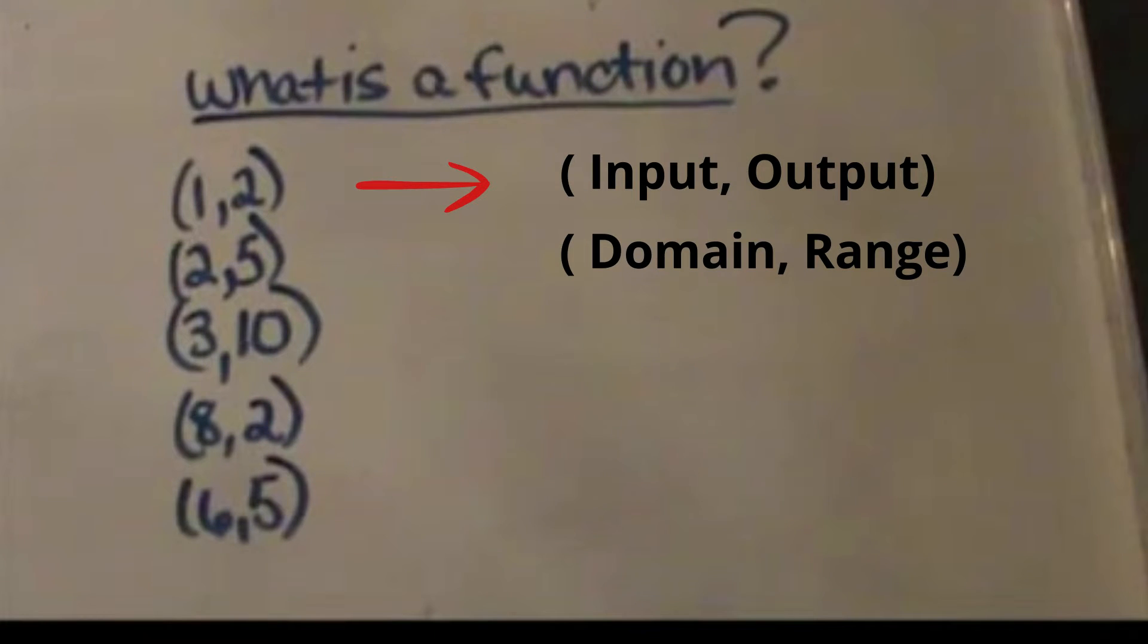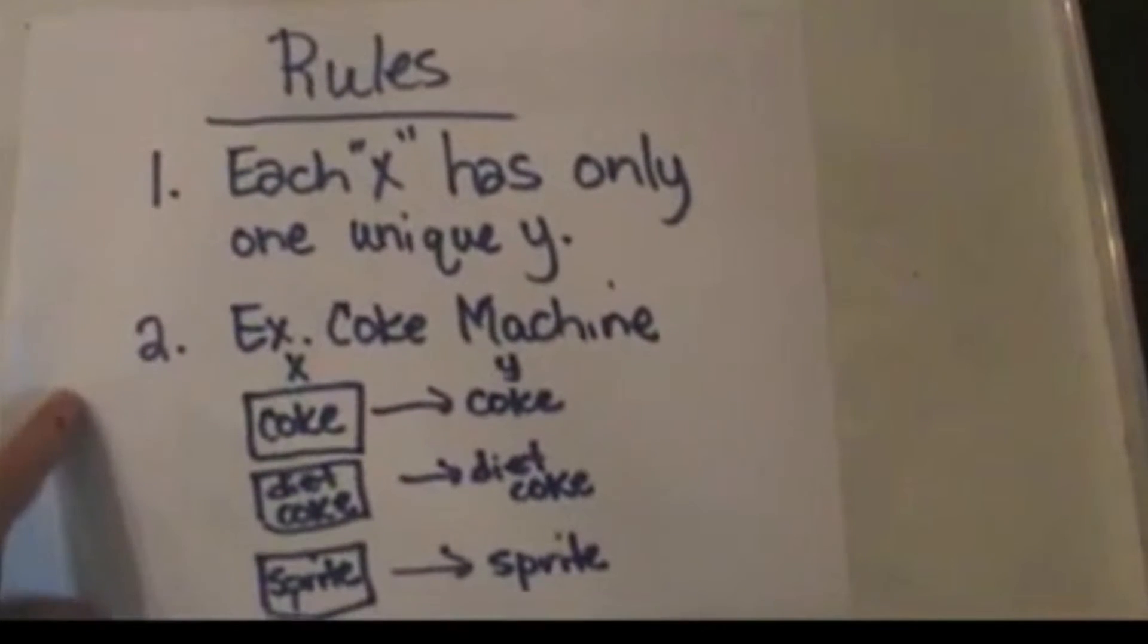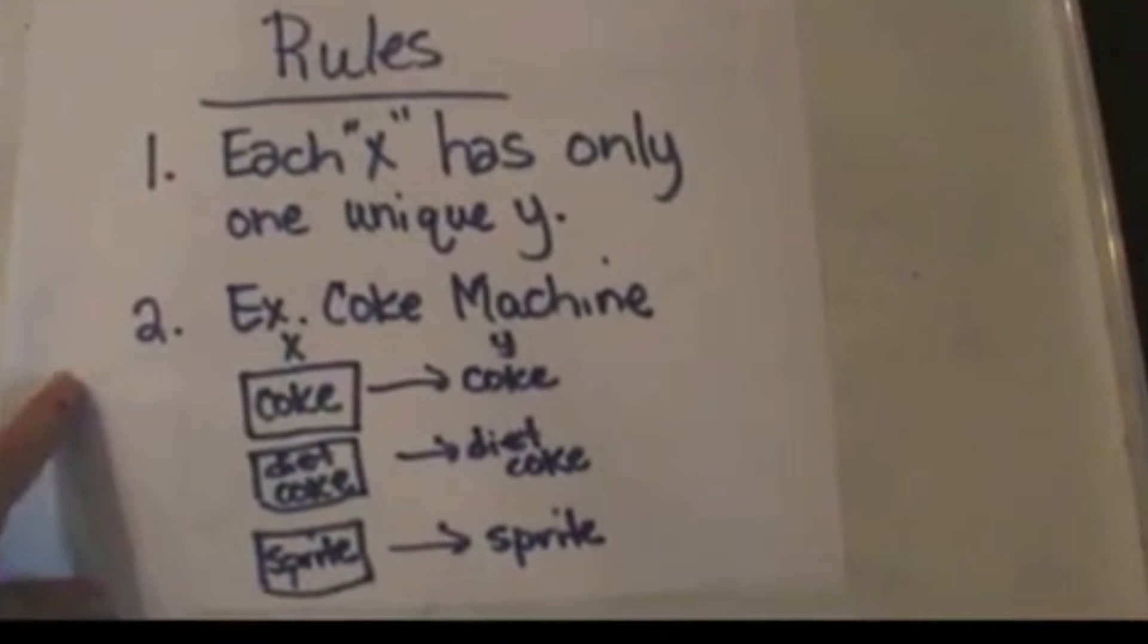Let's look at the rules, and then we'll come back and explain this example. What are the rules for deciding if you have a function or not? First, you have to know that each x or input has only one unique y output. That's kind of hard to think about,